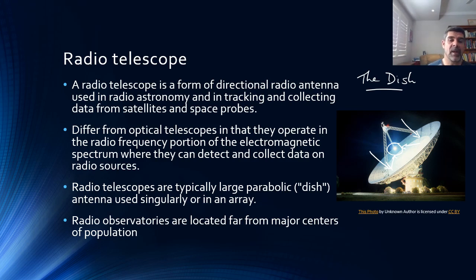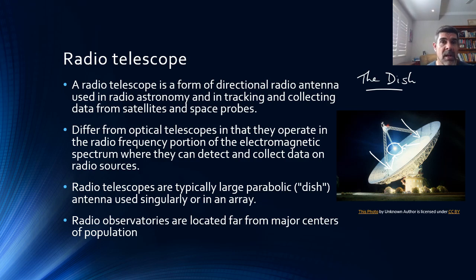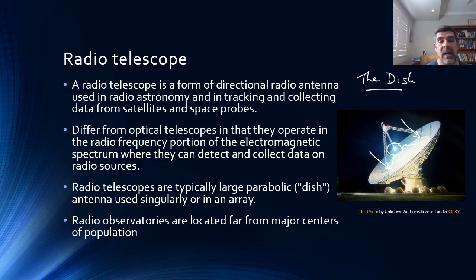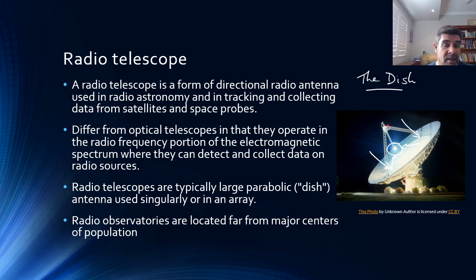These large parabolic dishes can be used on their own, as at Parkes, or as part of an array. This technique is called interferometry, where a number of different telescopes are set up in a line or group to gather more information about particular parts of the sky. Unlike optical telescopes, which tend to be located on mountain tops to get above layers of atmosphere and away from ambient light, radio telescopes tend to be located on flat plains or in valleys because their bigger problem is electromagnetic radiation from closer sources — radio, television, and microwave signals.